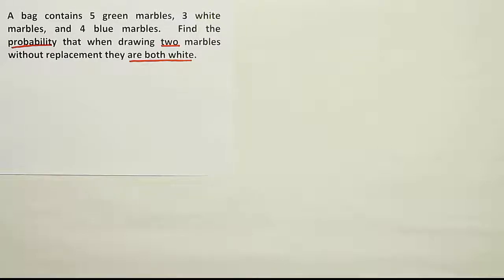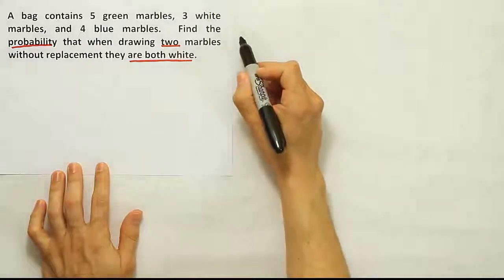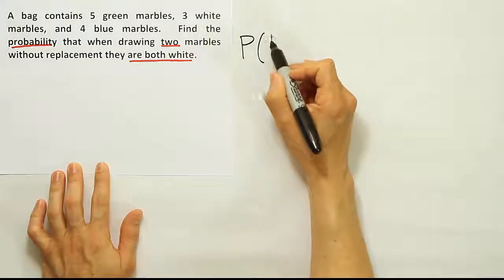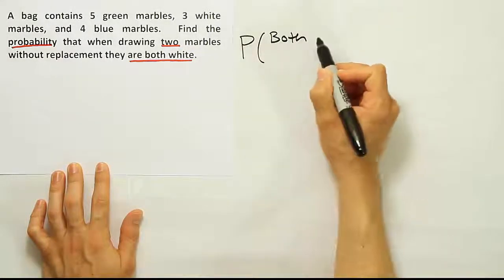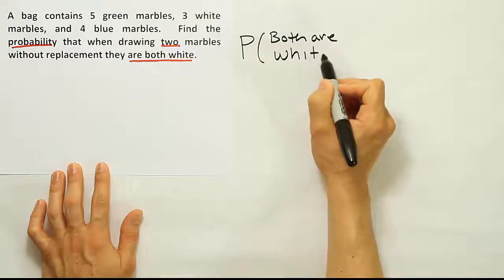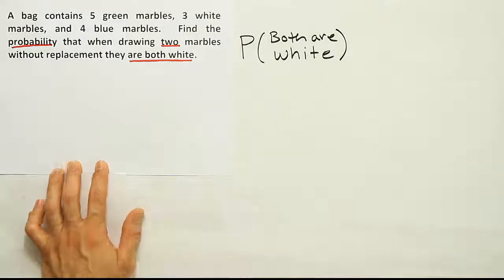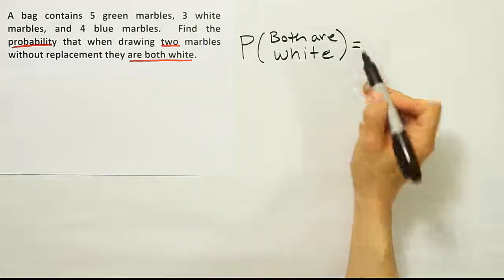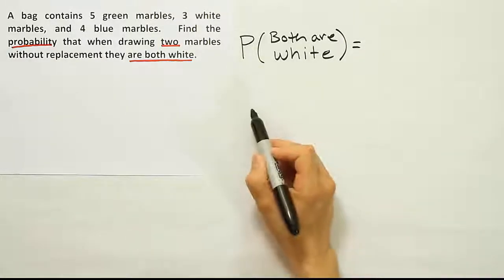So when I read that problem, then after identifying its multiplication rule of probability, I want to write a statement out. So I'm going to say probability that both are white. That's just something to indicate to myself what I'm dealing with here. Probability that both are white.